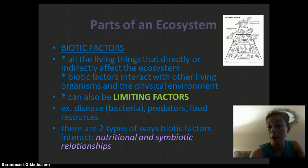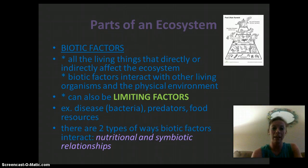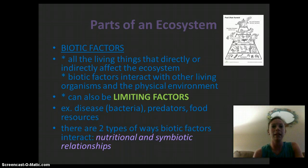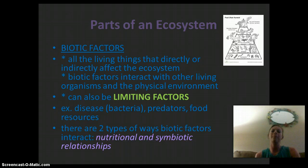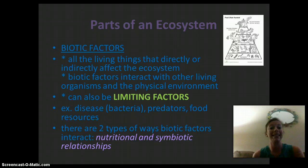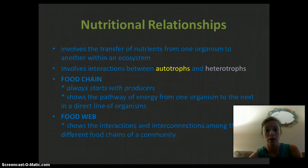Biotic factors are the living things that directly or indirectly affect the ecosystem. They interact with other living organisms and the physical environment. This could be two organisms living in the same space or competing for the same space, or one organism eating another — nutritional relationships. It could also be a symbiotic relationship, which we'll talk about shortly. Biotic factors can also be limiting factors; examples include disease, bacteria, predators, and food resources.